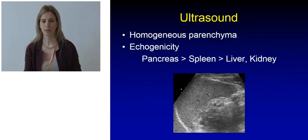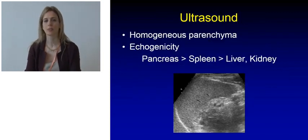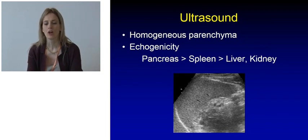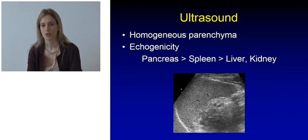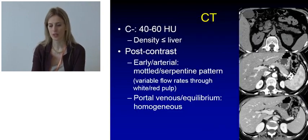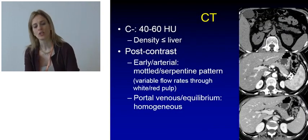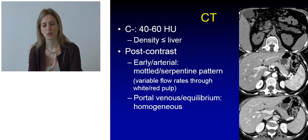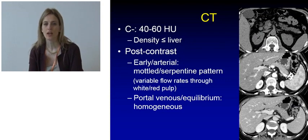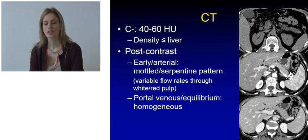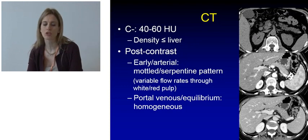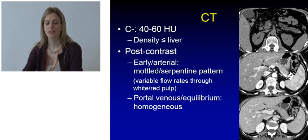Let's take one step back and see how the spleen appears on regular imaging. On ultrasound, the spleen has a homogeneous parenchyma and its echogenicity is in between that of the pancreas and of the liver and kidney. On non-contrast CT, the spleen is hypoattenuating to the liver and has a density between 40 and 60 Hounsfield units. After contrast administration, in the arterial phase it shows a mottled serpentine enhancement pattern and in the equilibrium phase it appears homogeneous.